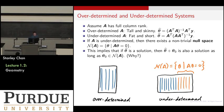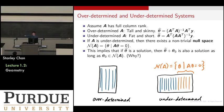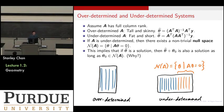If A is underdetermined, you can show there exists a non-trivial null space. The null space contains all possible theta such that A theta = 0. Any fat matrix will have this property. For tall matrices, it depends on whether the columns are independent or not. In the blue columns are the independent ones, and the orange columns are the dependent ones forming the null space.